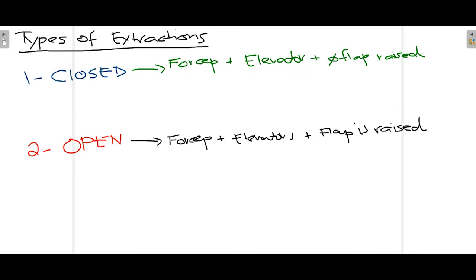In open extraction, forceps and elevators are used but the flap is raised. By flap we mean the adjacent gingiva covering the respective tooth. Open extraction is mainly performed when closed extraction is not possible. Indications include impacted teeth, ankylosis, hypercementosis, and submerged primary molars due to ankylosis. In this video we'll mainly talk about closed extractions.